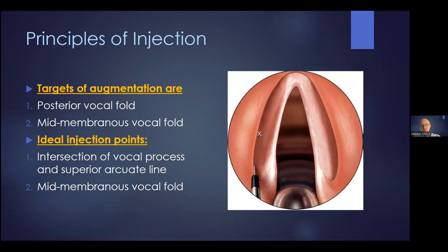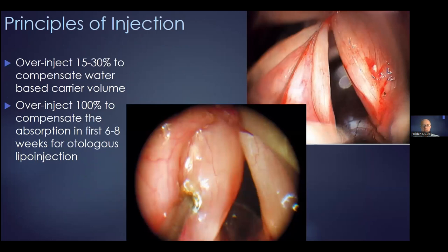How do we inject? We try to inject and medialize the whole vocal fold together. The most commonly injected sites are at the lateral part of the vocal process of the arytenoid, and the second point — marked with a cross — is the mid-membranous portion. Making the injection deep into the muscle at those spots usually medializes the vocal fold well to the medial side. Depending on the substance used — for example, fat — you need to sometimes over-inject.